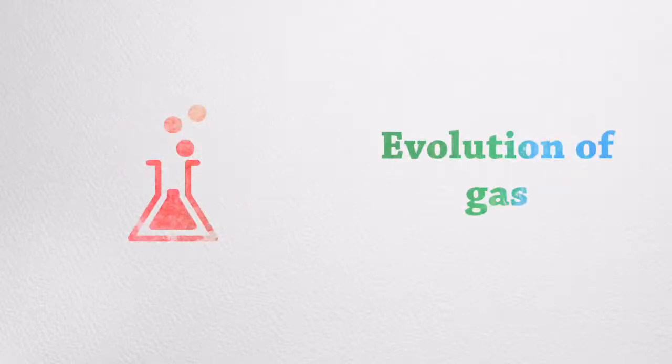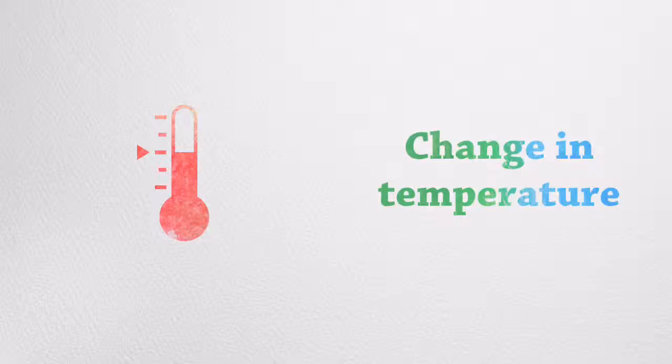The third criteria to know whether a chemical reaction has taken place is if we can observe an evolution of a gas. The fourth thing to observe is if there is a change in temperature.